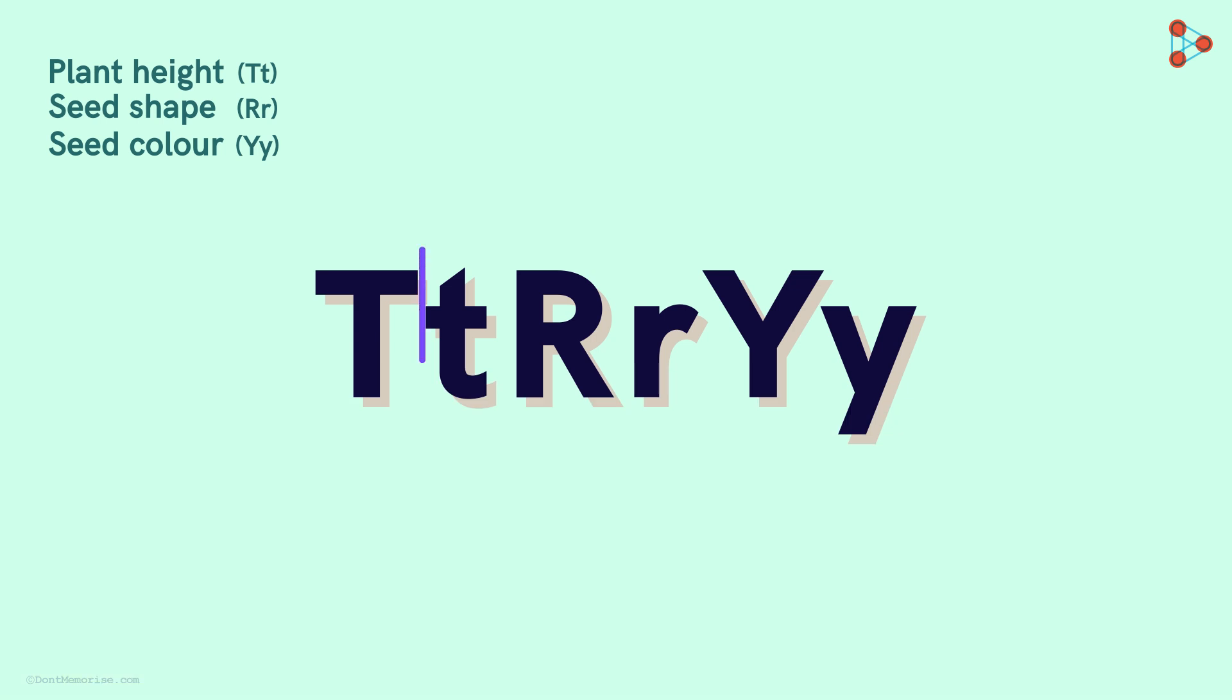That means the T can be assorted with either R or r and similarly with either Y or y! There is a simple way to find the combinations!